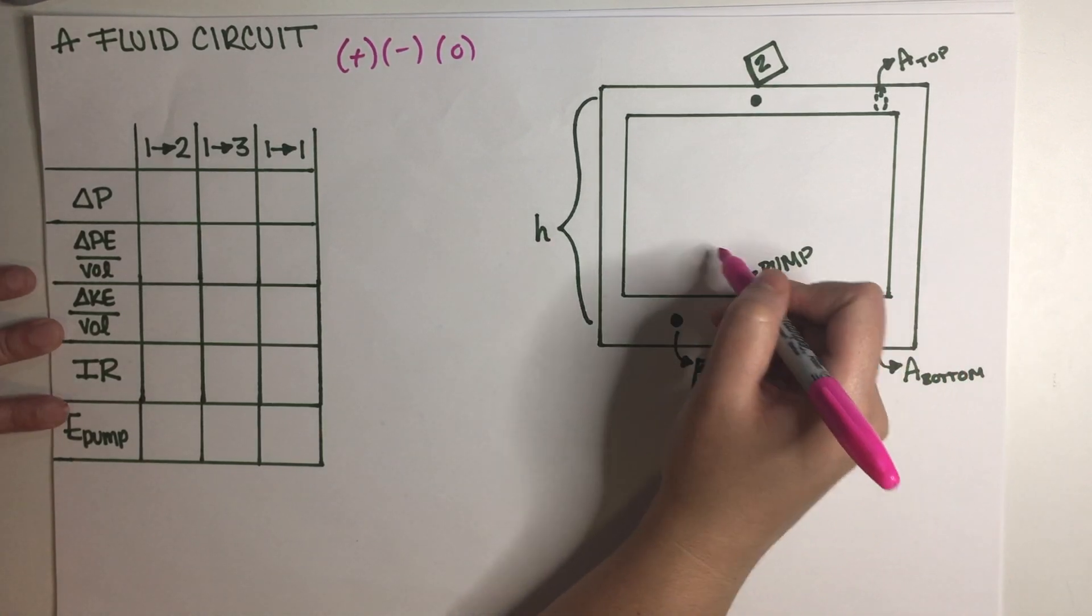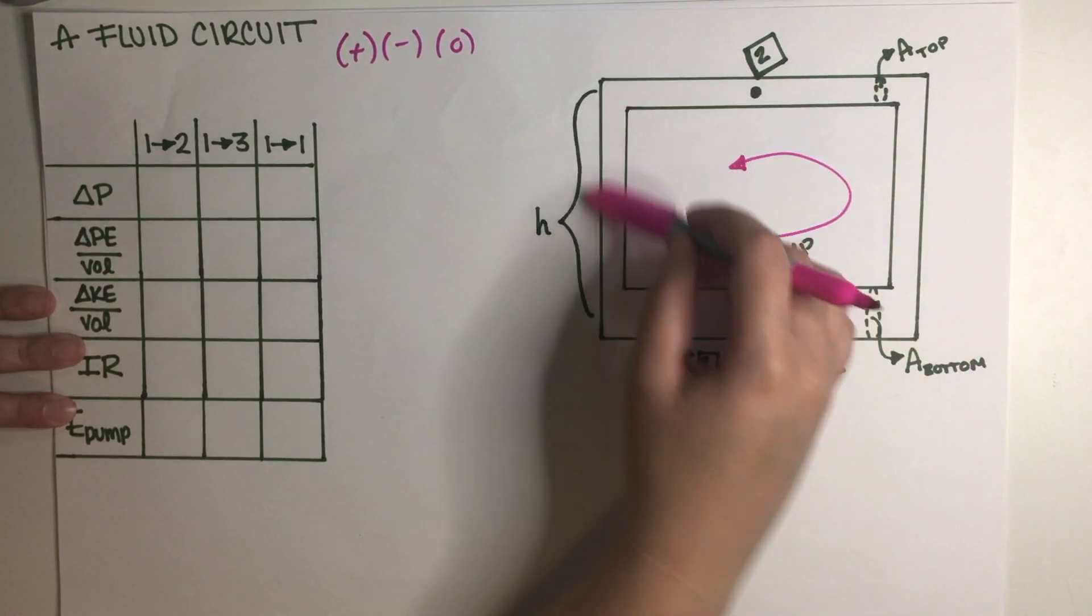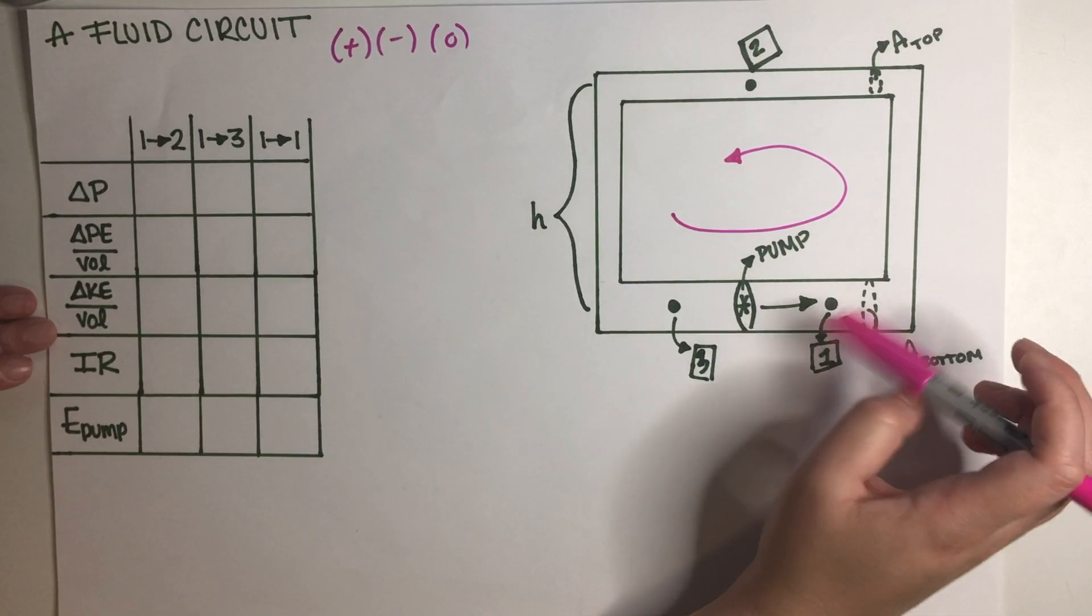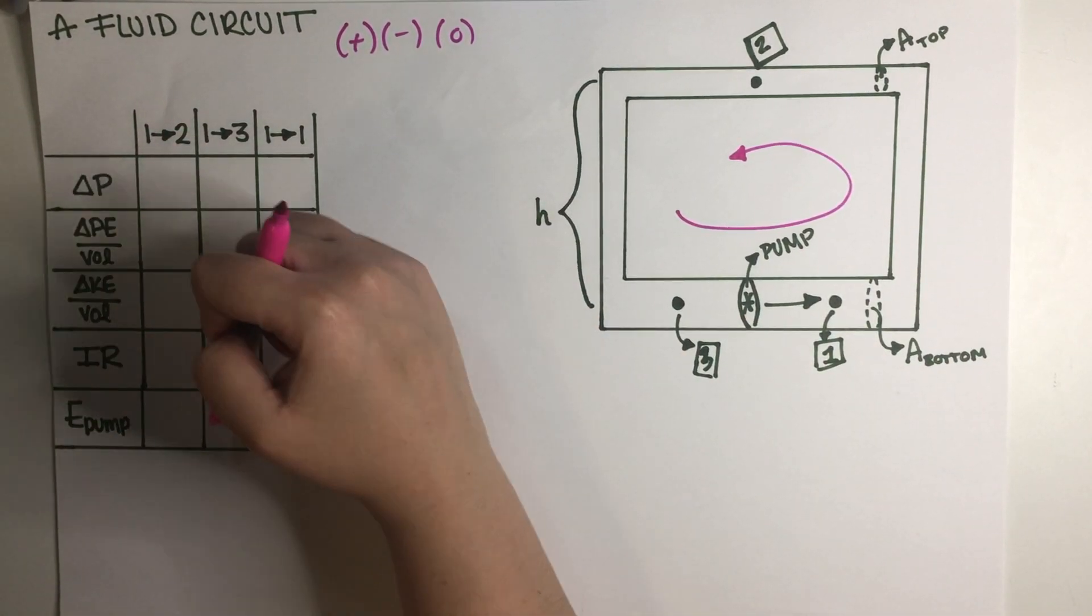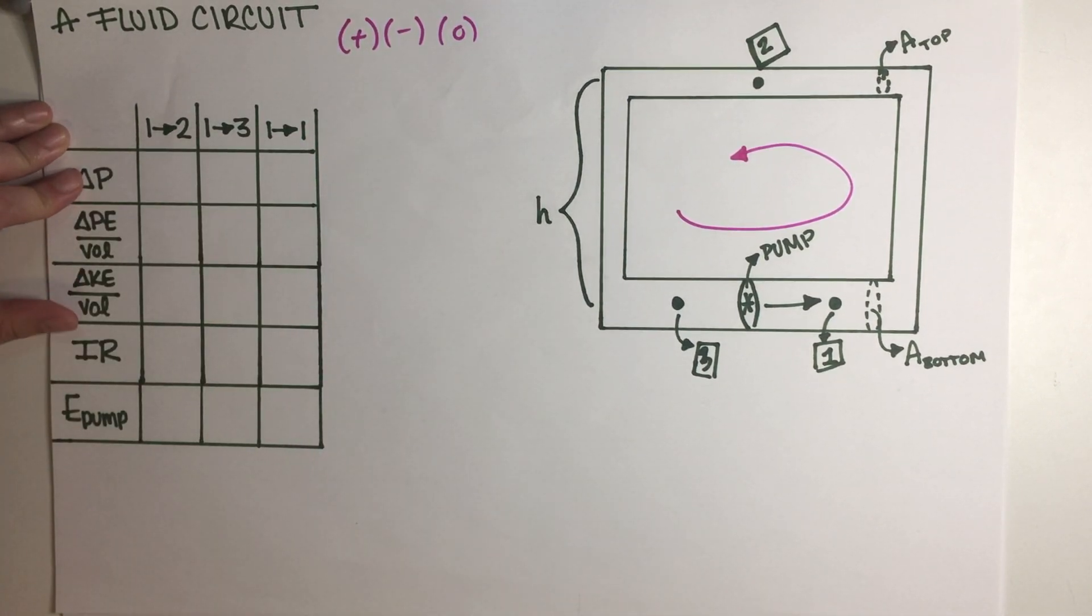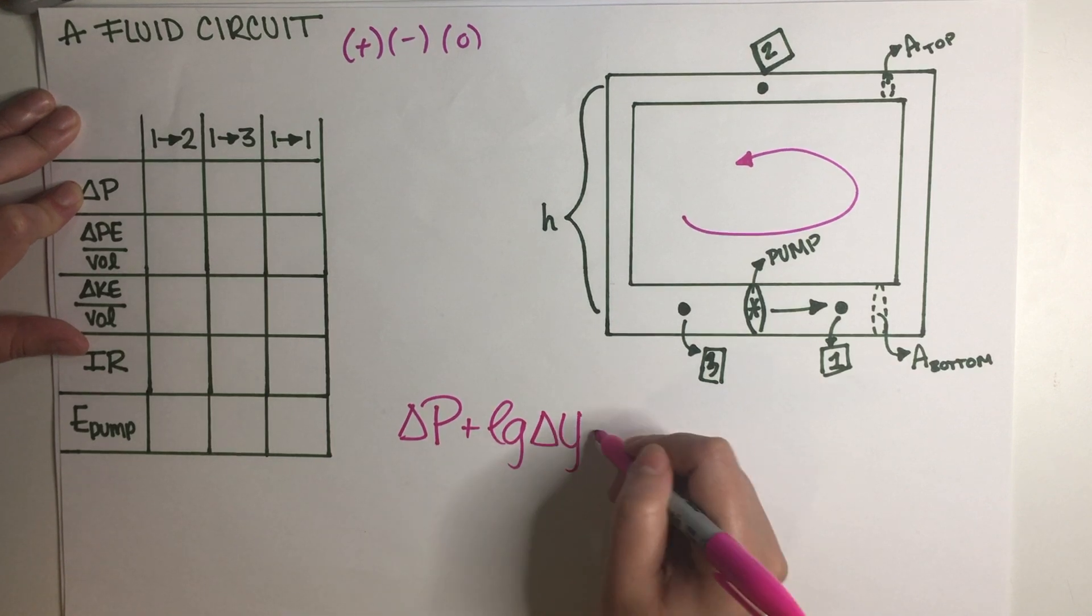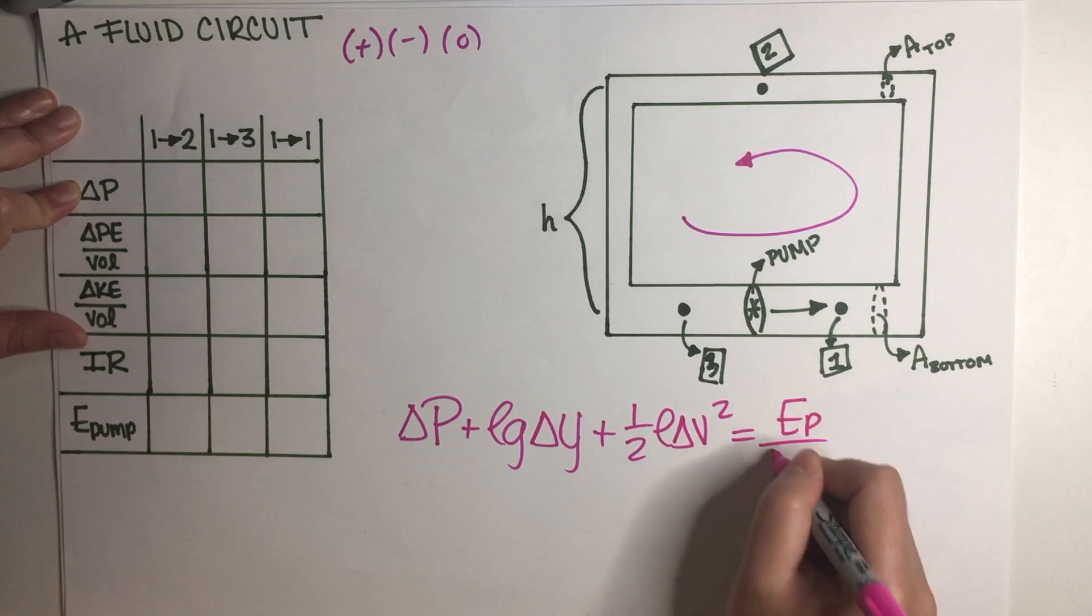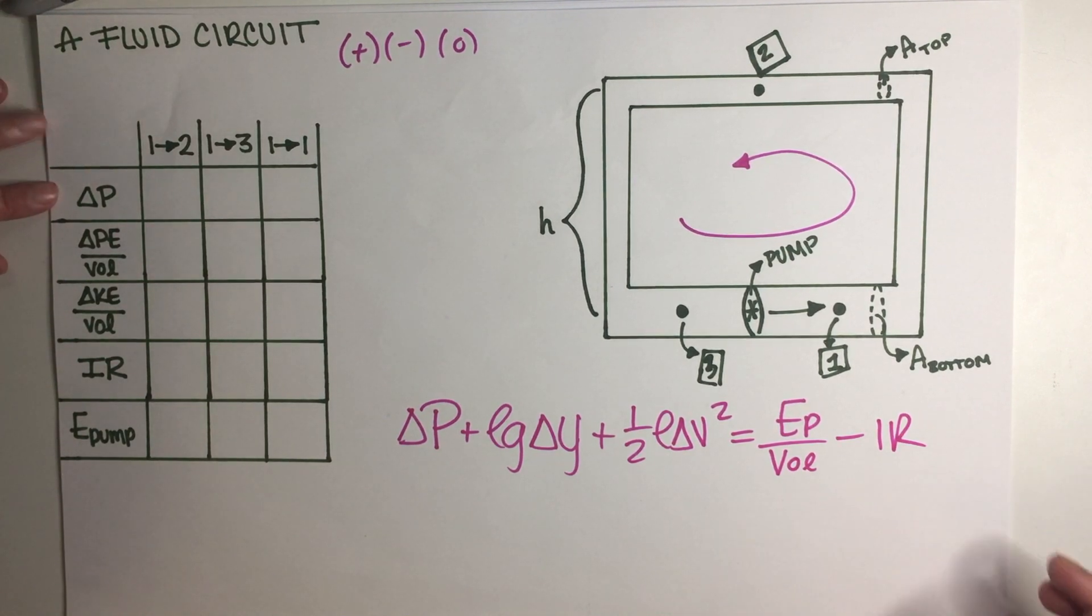Just to be clear, the water according to the picture is going like this and there is some total resistance going through the pipe. So let's get started. I think that the easiest way to solve this problem would be to just look at columns because that way we just need to apply our Bernoulli equation three times and then we're done. So let me just write the Bernoulli equation: ΔP + ρgΔy + ½ρΔv² = Ep/Vol - IR. All right, let's get started.